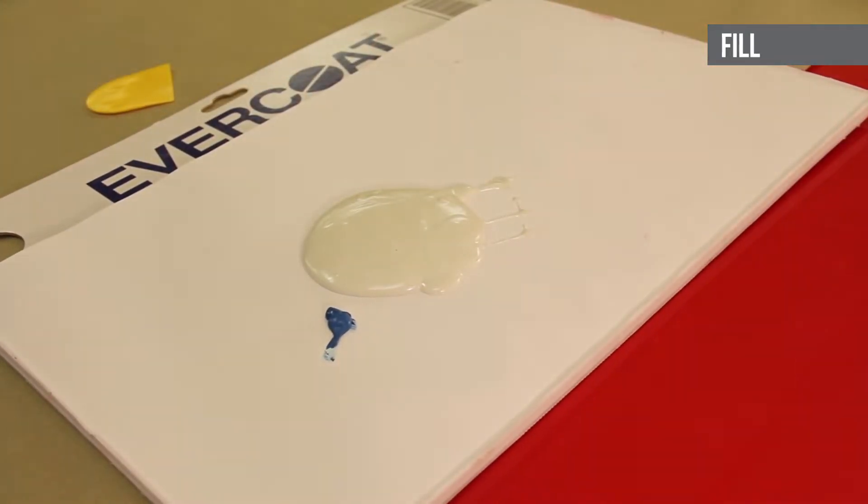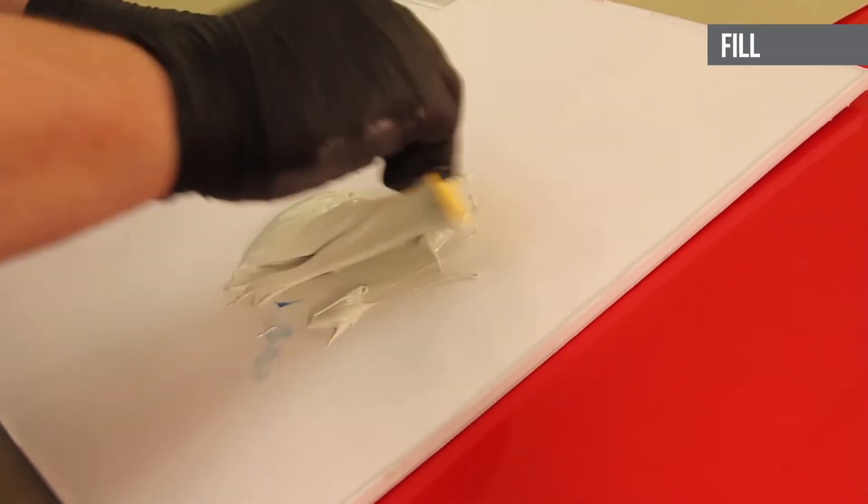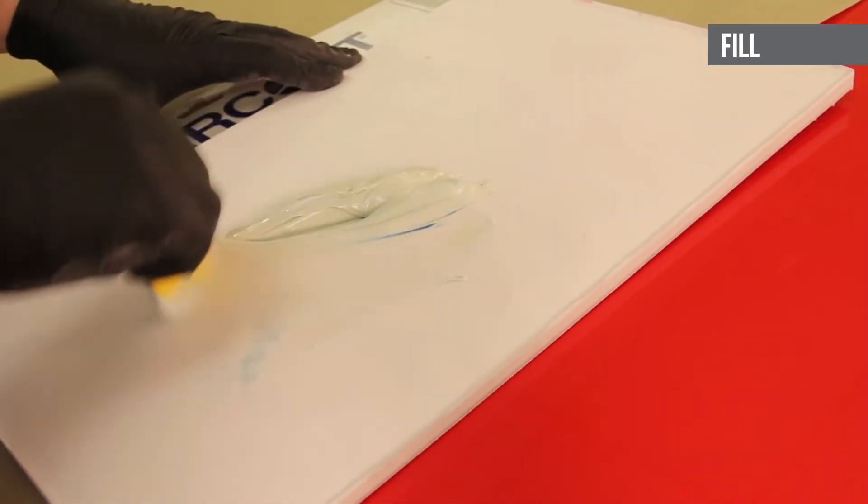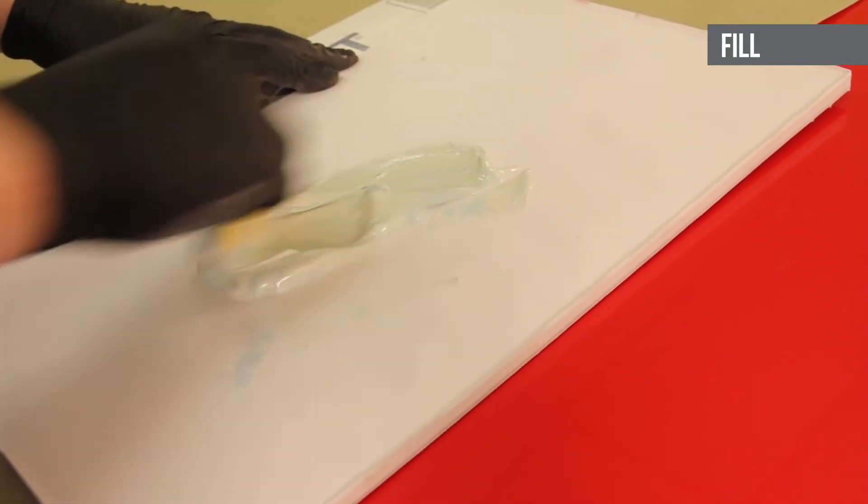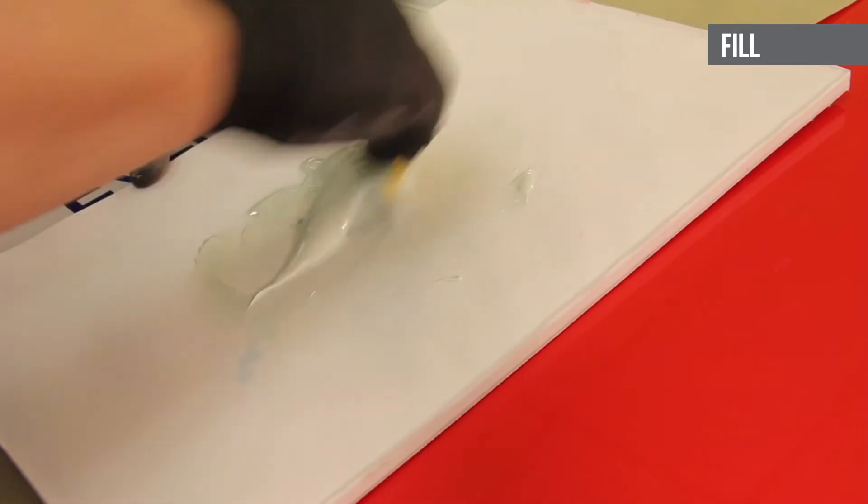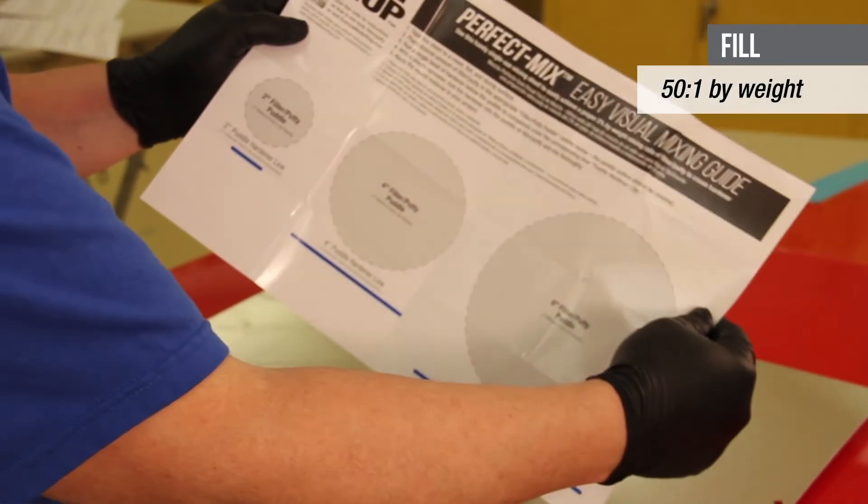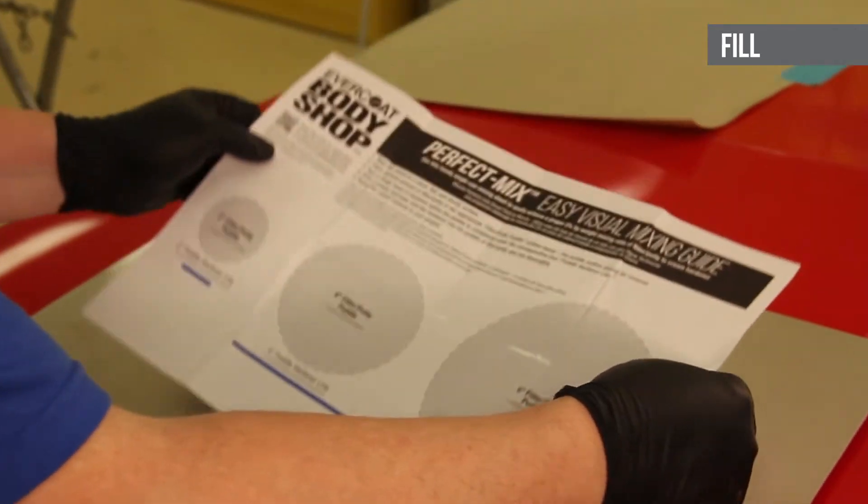The next step is the fill step. To optimize the performance of the body filler, it is important to mix the correct amount of body filler with the correct amount of cream hardener. The correct ratio is 50 parts body filler to one part cream hardener by weight. There are two options to help with achieving the correct mix ratio.